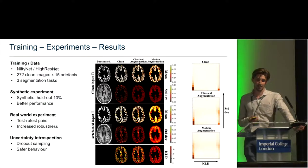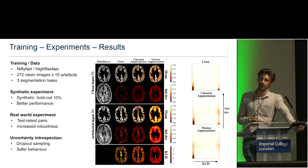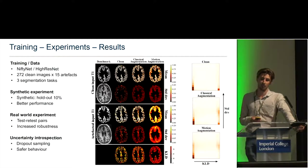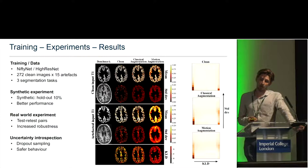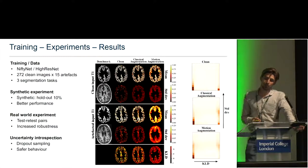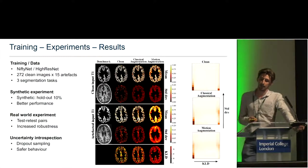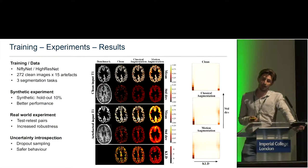To assess the safety of our motion-augmented model, we computed uncertainty estimates using a dropout sampling technique, where uncertainty is computed as the standard deviation of multiple inference samples of the dropout network. Looking at the figure in the middle, the motion-augmented model presented with an artifact image produces very high uncertainty compared to when it is presented with a clean image — a behavior that the clean and classically augmented models do not show.